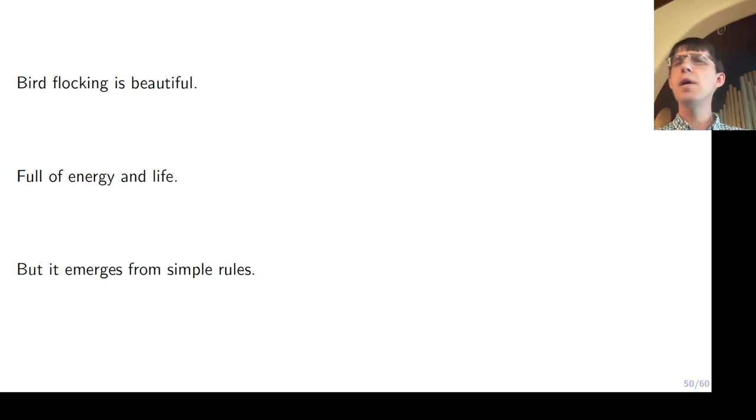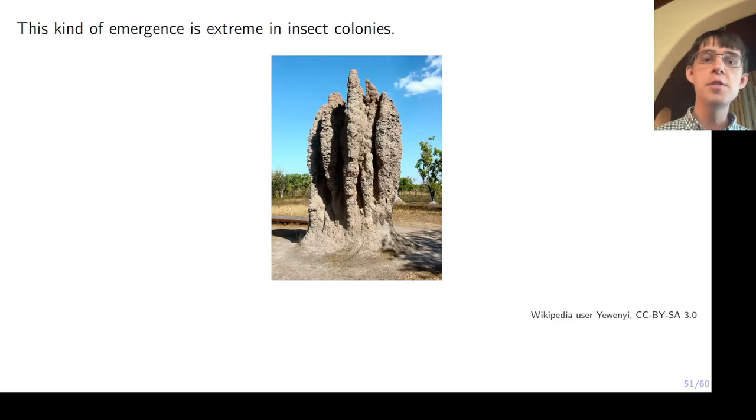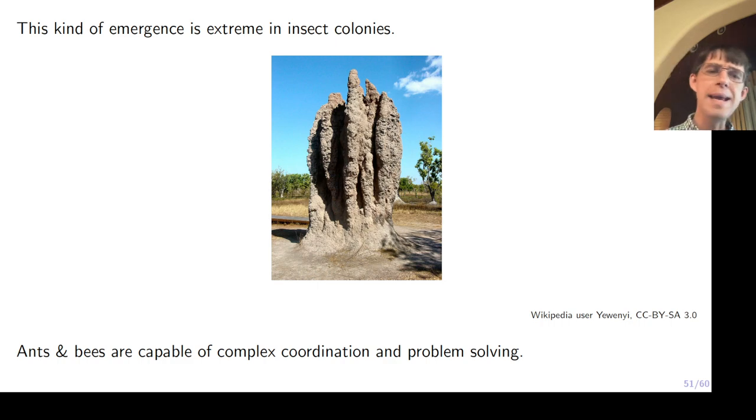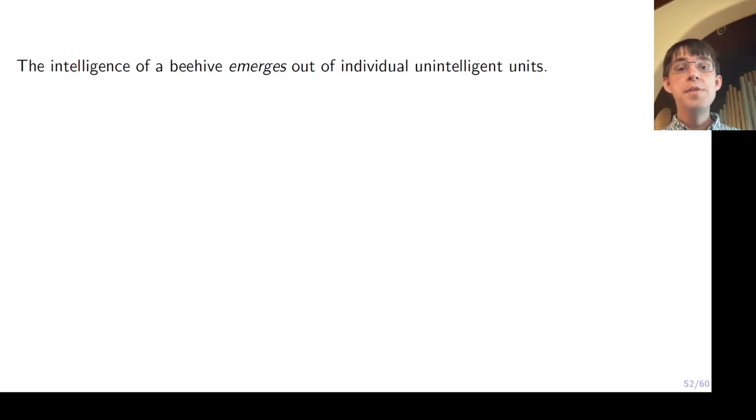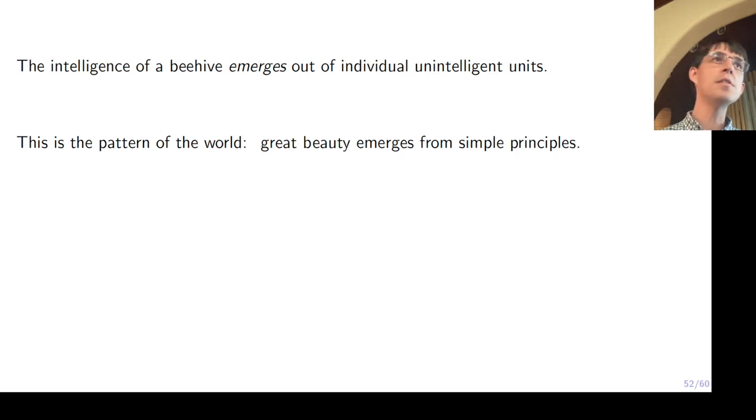Bird flocking is beautiful, right? It's full of energy and life, but it emerges from simple rules, okay? The birds don't really understand that they're doing this. They don't get together and say, hey, wouldn't it be great if we all went in like a big blob together? It's just because they are obeying those two simple rules, all right? This kind of emergence is really extreme in insect colonies. This is a termite colony where they built this giant structure. You know, like ants and bees, they are capable of complex coordination and problem solving as a group. This kind of intelligence of a beehive or an ant colony, it emerges out of individual unintelligent units. The ant colony as a whole has certain goals that it's trying to accomplish, even though the individual ants are not aware of the role that they're playing in the larger goal, right? This is actually the way the whole world works. Great beauty, which emerges from simple principles.